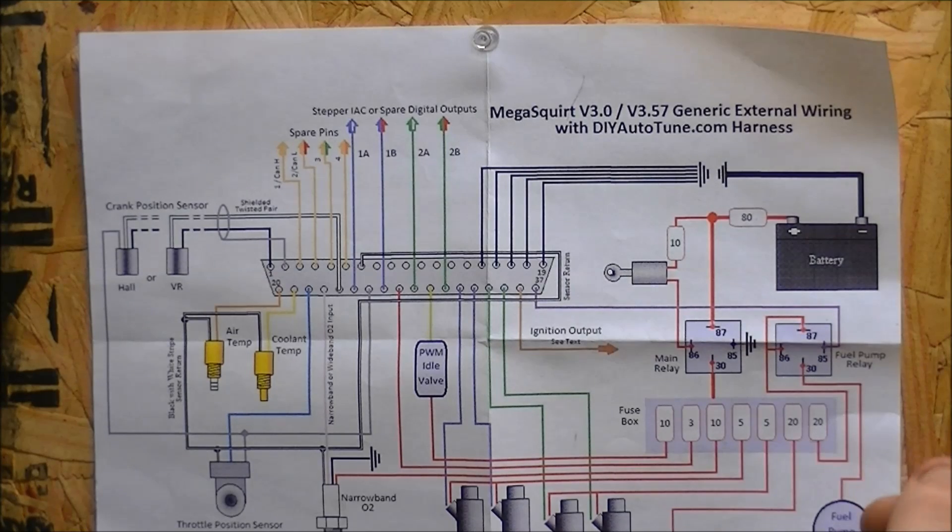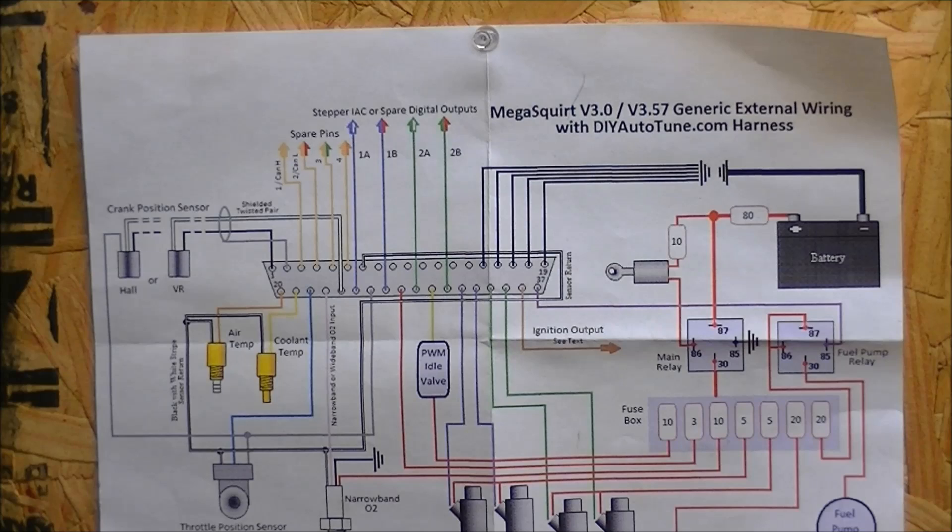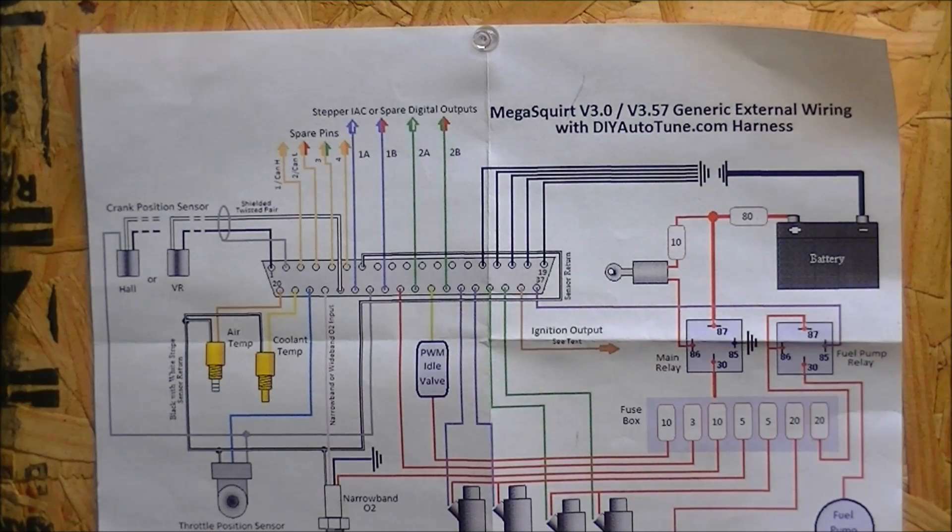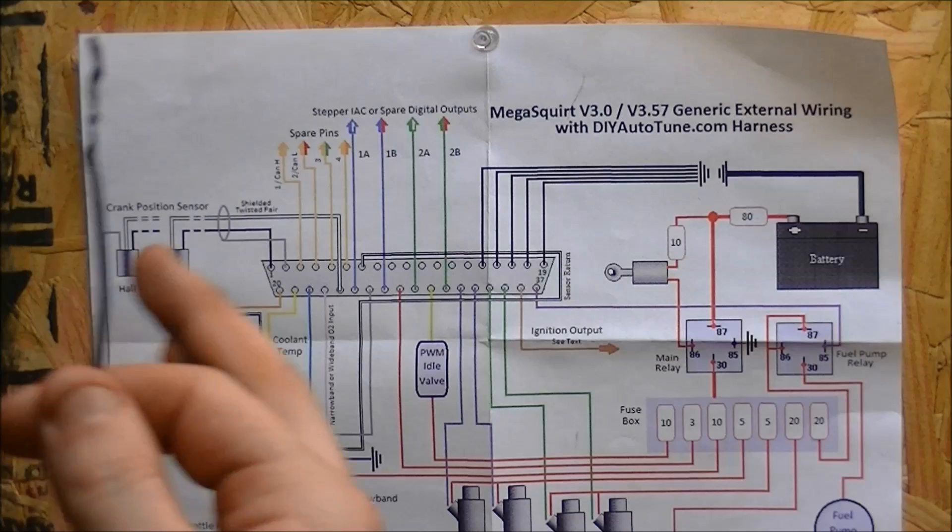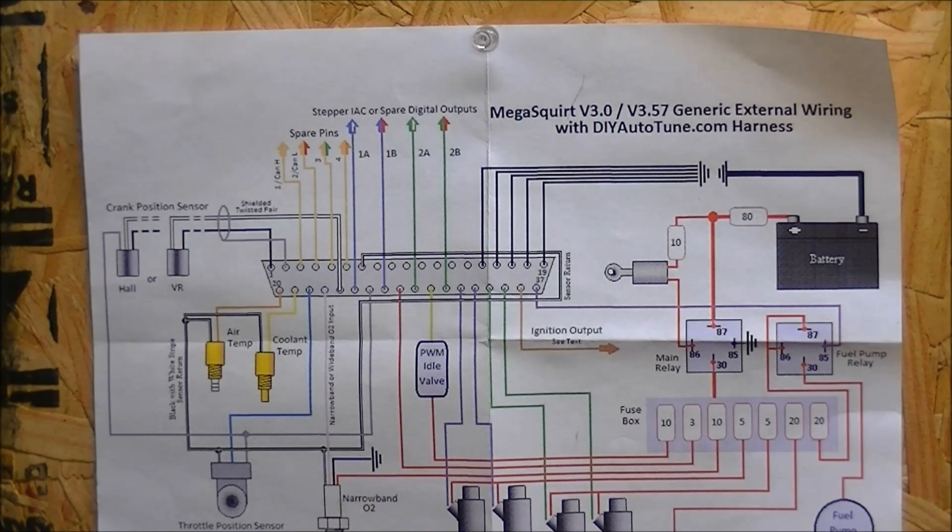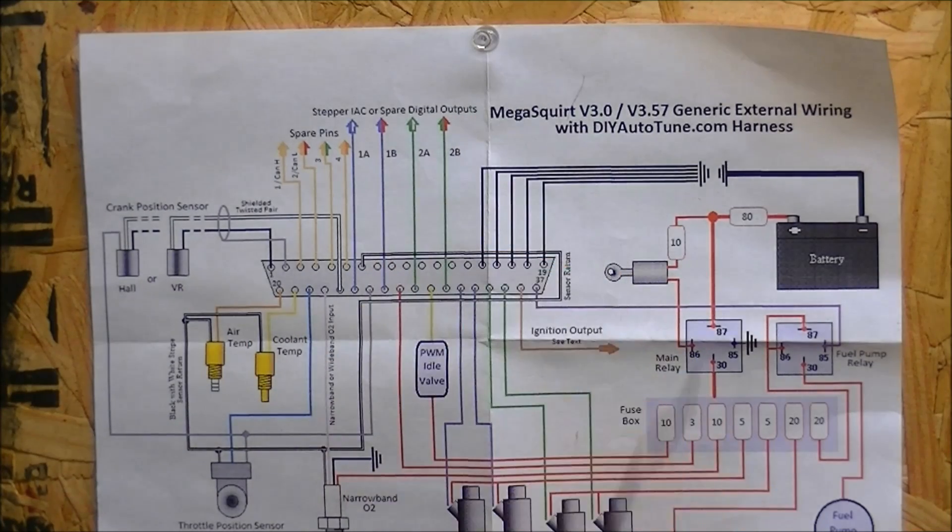It doesn't really matter because the MegaSquirt is going to ground that relay because it uses less amperage to ground it than it does to feed power. So MegaSquirt is going to ground that side. Basically that's it. Once you get to the fuse block, it's pretty much just plug and play, just follow the wiring harness and things like that.